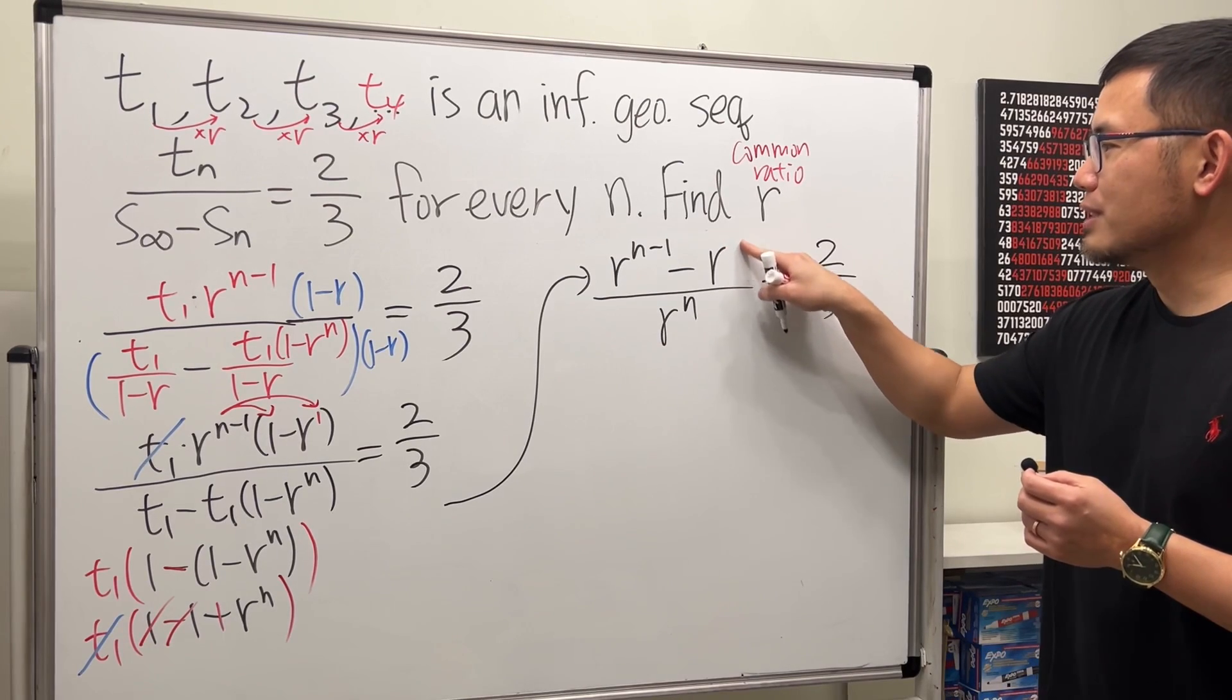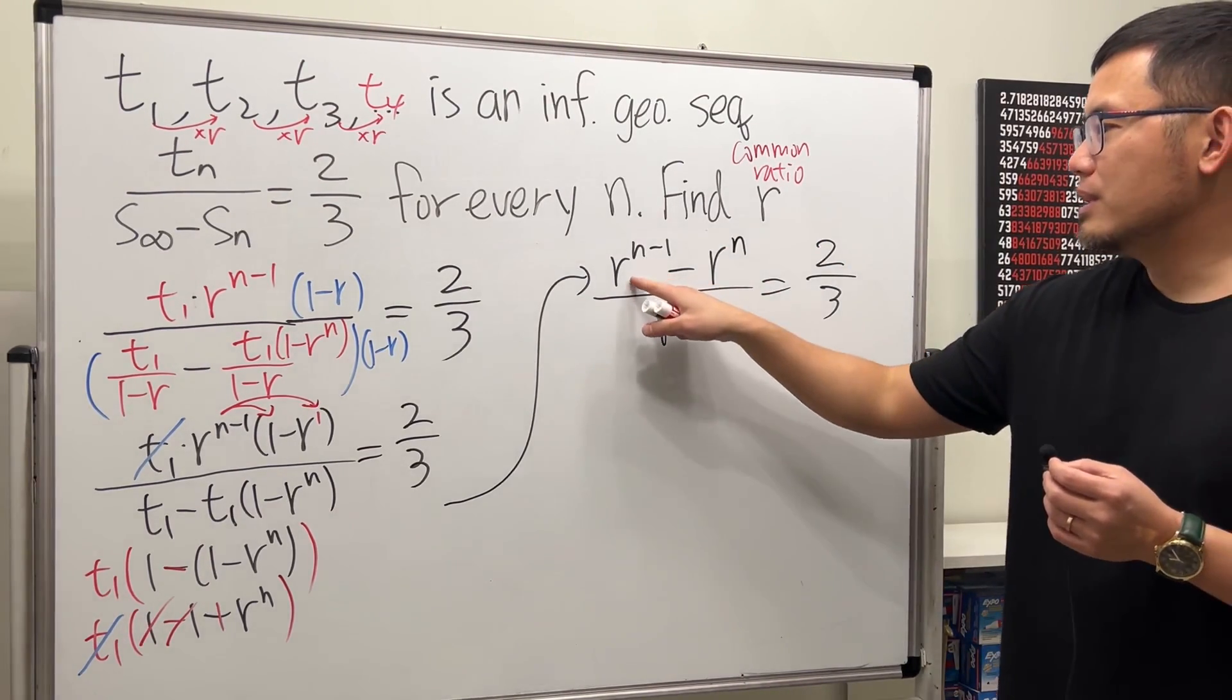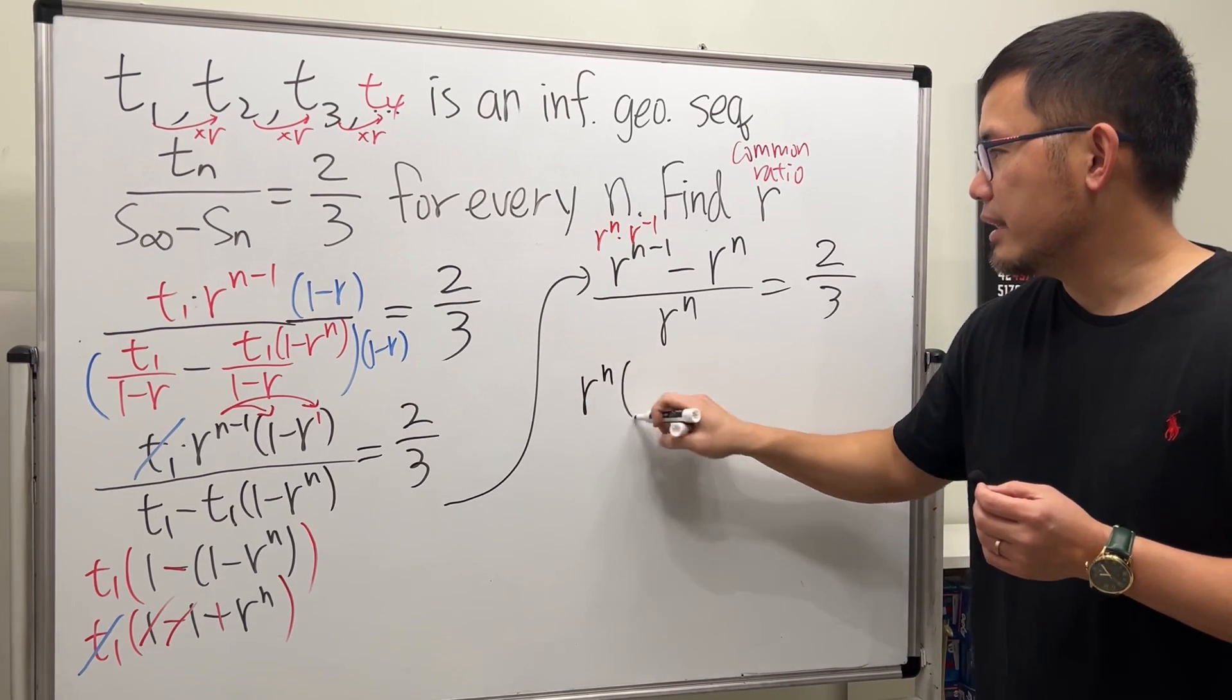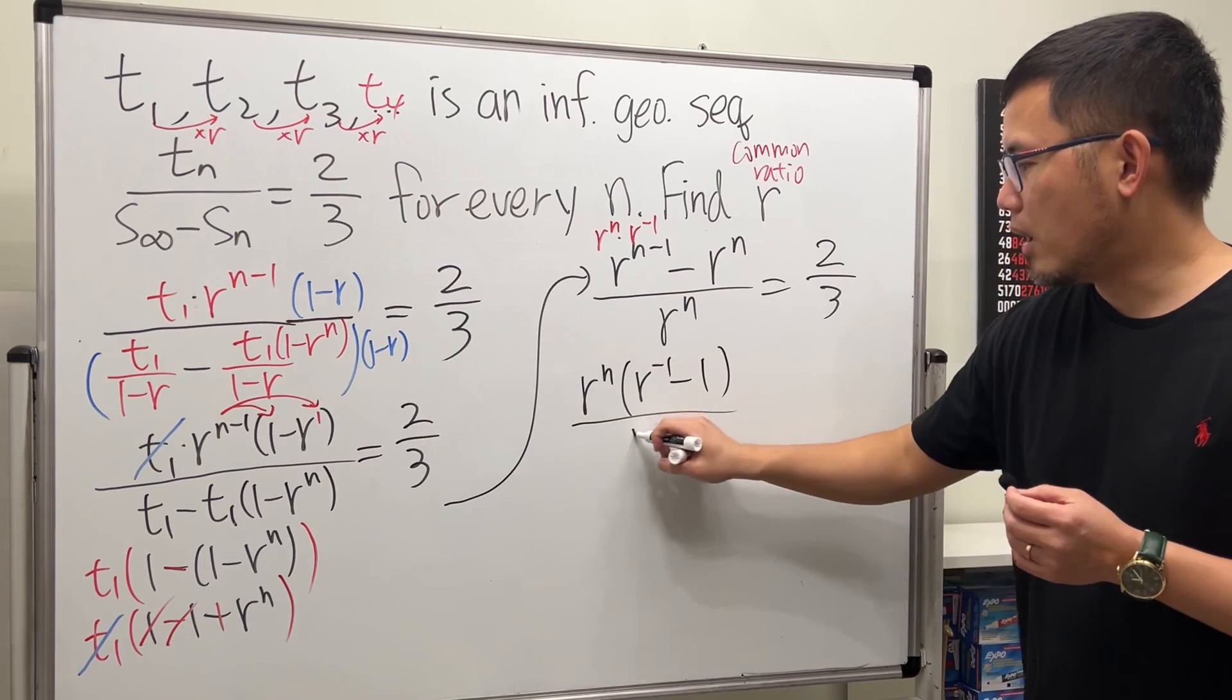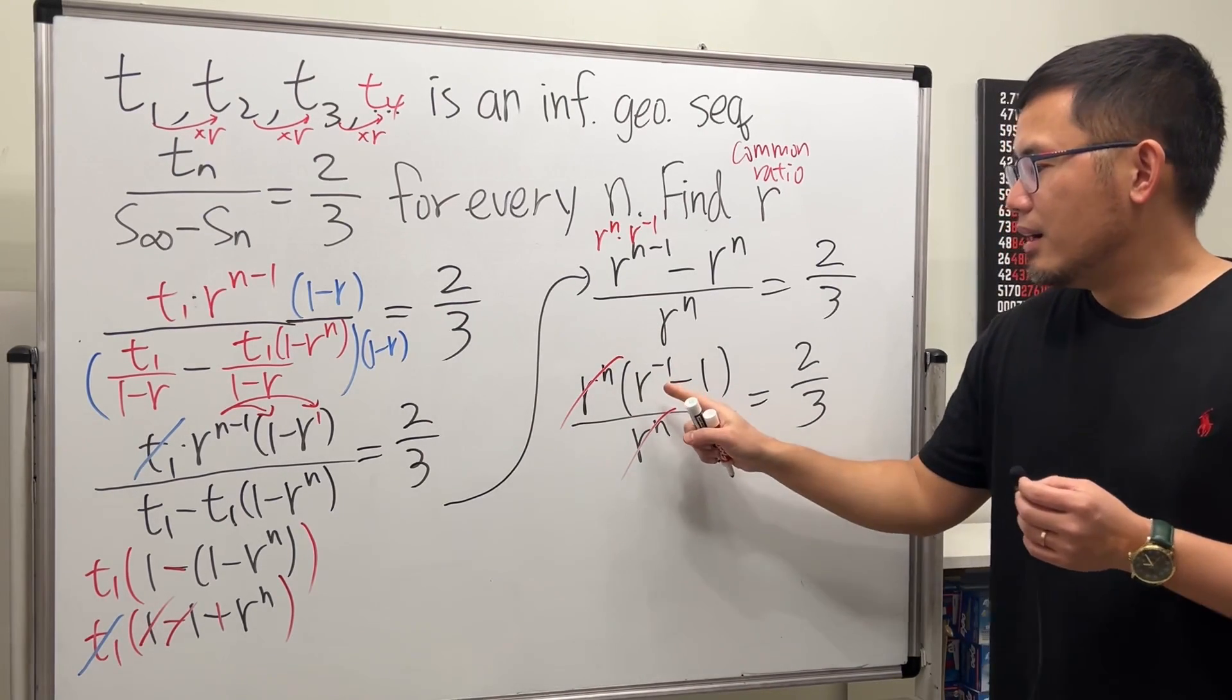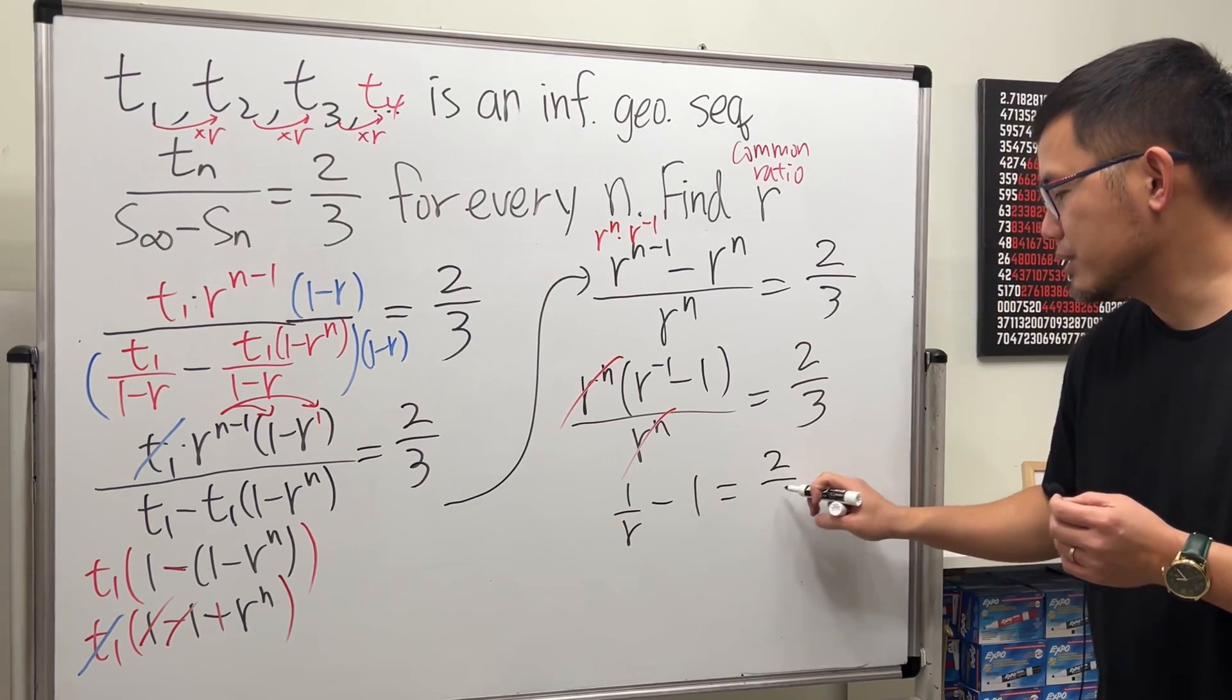All right. So we are almost there. How can we make it happen, though? Have a look. This right here is the same as saying, r to the n times r to the negative 1. So I can factor out r to the n on the top. And then, I will just get r to the negative 1 minus 1 over r to the n equals 2 over 3. And then, cancel out r to the n.